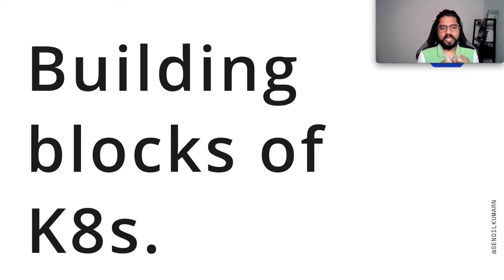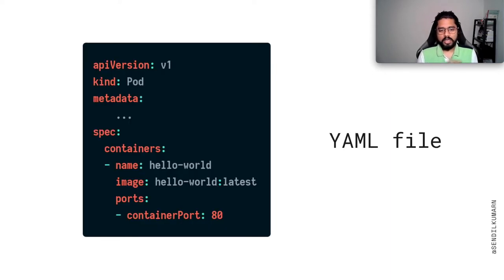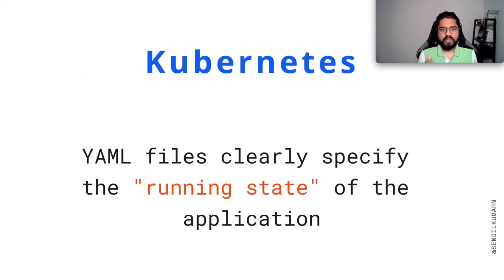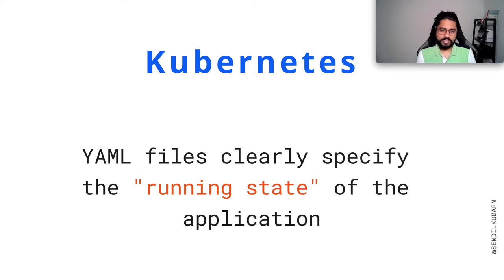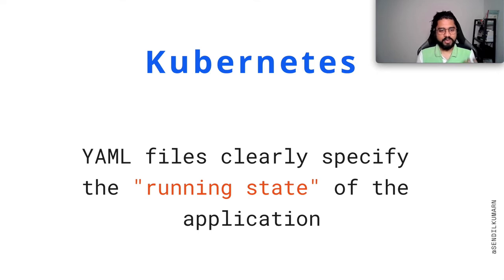Let's get started by understanding the building blocks of Kubernetes — the object model, or Kubernetes objects. In the Kubernetes world, everything is described in the format of a YAML file. You provide a YAML file to Kubernetes and it clearly specifies the running state of the application. From those configuration files you can infer how many replications are running, how many deployments there are, and what problems exist. It's very clear and crisp. All YAML files start with an API version, irrespective of the object model.